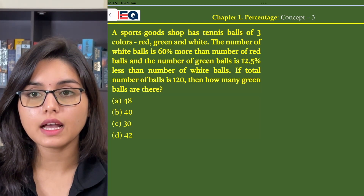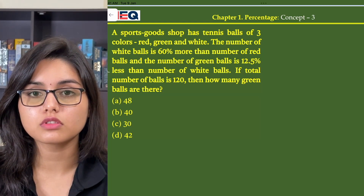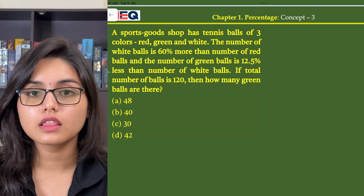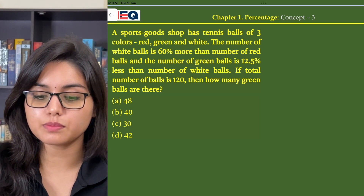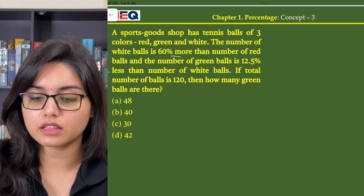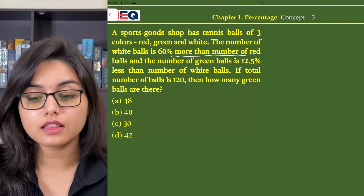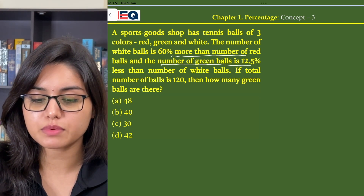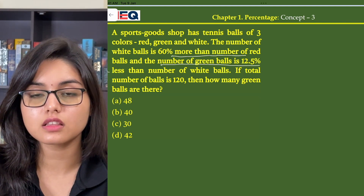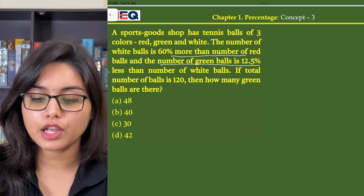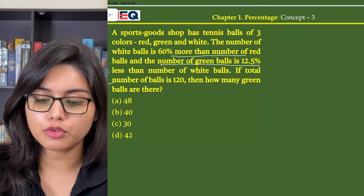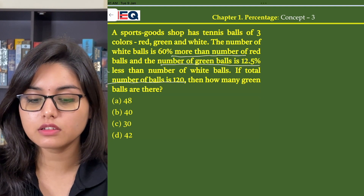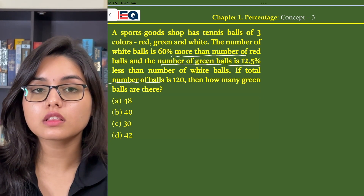A sports goods shop has tennis balls of three colors: red, green, and white. The number of white balls is 60 percent more than the number of red balls, and the number of green balls is 12.5 percent less than the number of white balls. If the total number of balls is 120, then how many green balls are there?